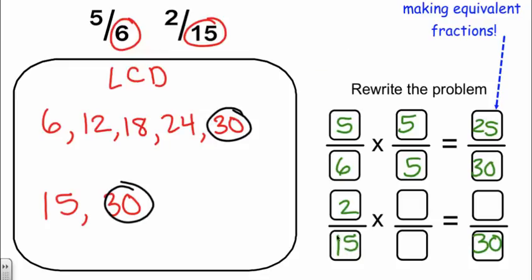Coming down here, what times 15 is going to give us 30? 2. So I'm going to do the same thing in my numerator, 2 times 2 is 4. So my two new fractions are 25 thirtieths and 4 thirtieths. Same denominators now, so I can go ahead and add or subtract these fractions if needed.